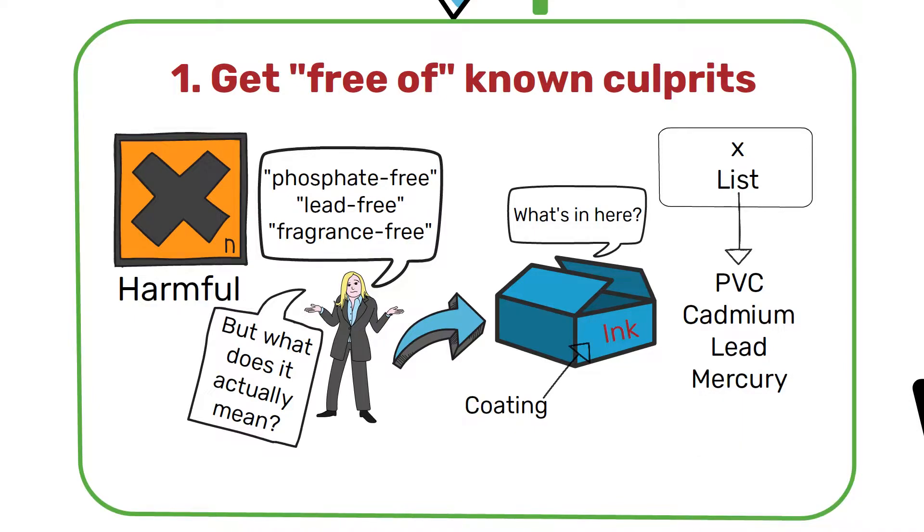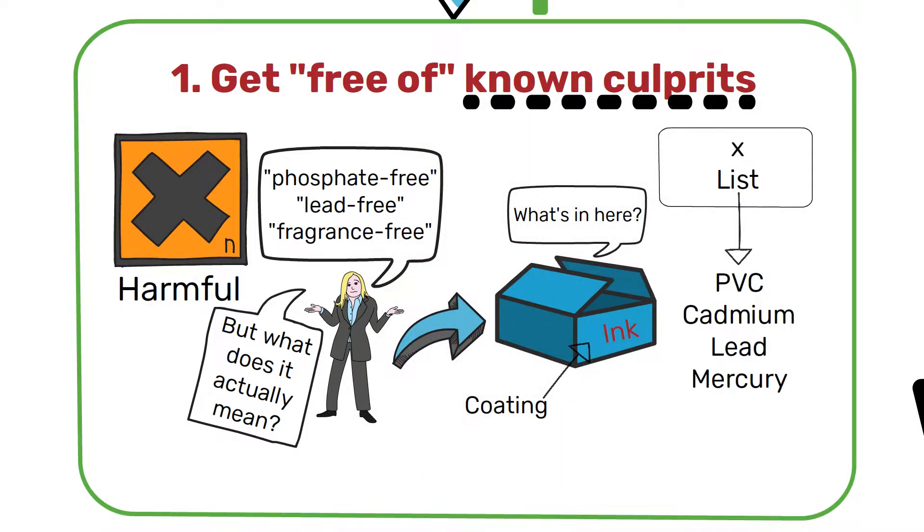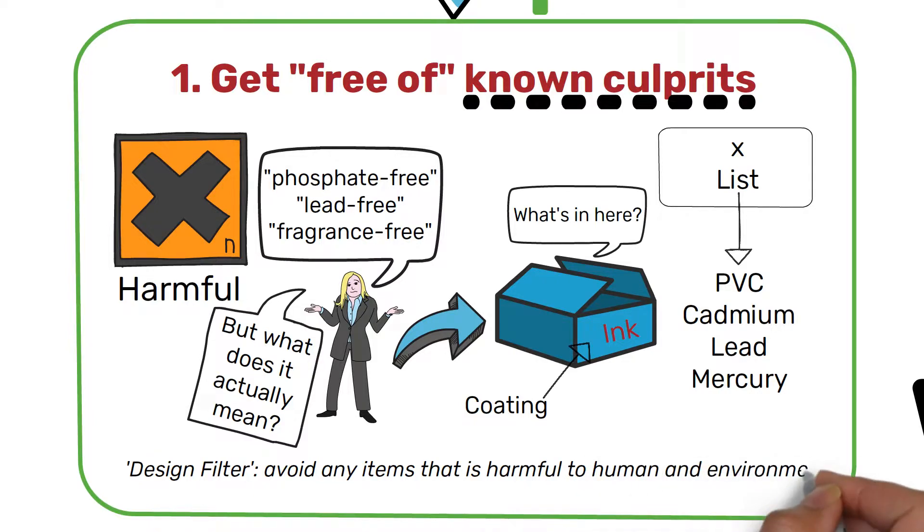More information about this list comes at step 3. For now, talking about known culprits, the decision to create products that are free of harmful substances is the fundamental of what we call a design filter, which is fairly crude, equivalent to the decision not to include any items that might be harmful to humans and environment.